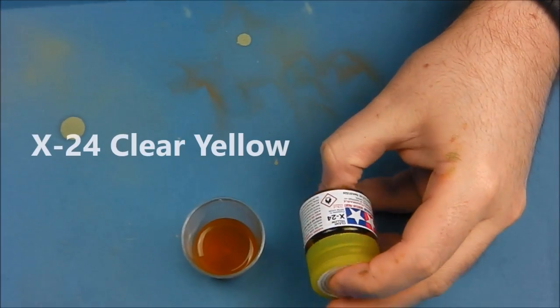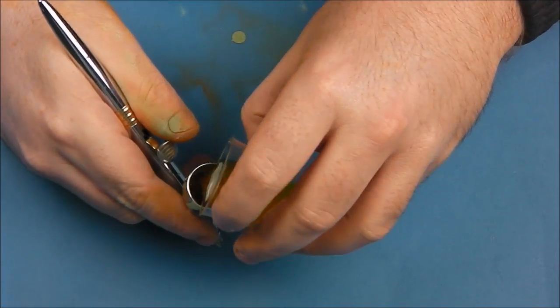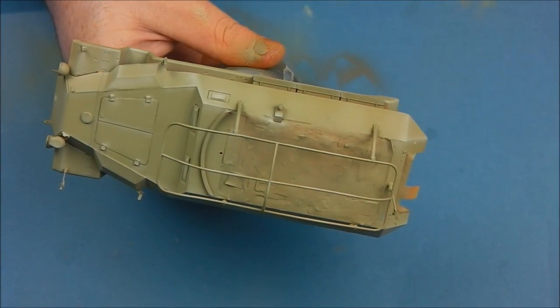With all our highlighting done, it's time to add a quick filter. For this we're going to use X24 clear yellow. I'm going to thin this very heavily and apply a very light glaze of clear yellow.